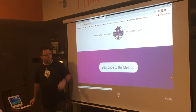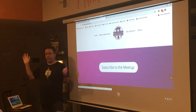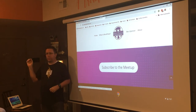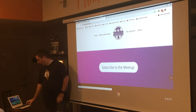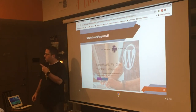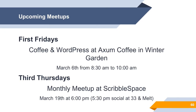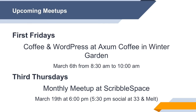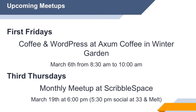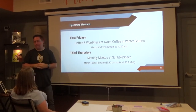How many of you saw our event tonight in your WordPress dashboard? And how many saw it on meetup.com? That was actually flipped from what I thought — that's great, we're getting good coverage either way. Next meetups: March 6th from 8:30 to 10 at Axum Coffee in Winter Garden, and March 19th from six o'clock here — same format as tonight. We do have a little social we meet next door at 33 and Melt before the meeting.